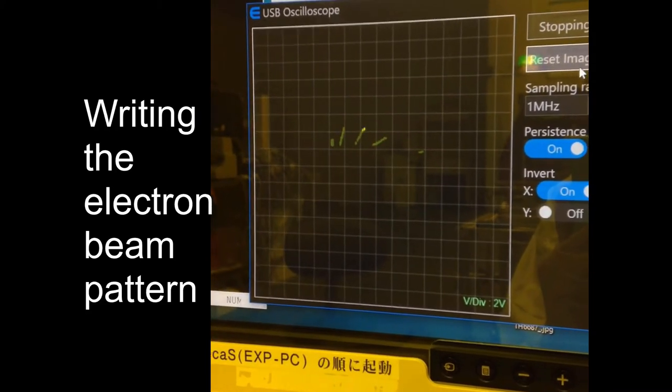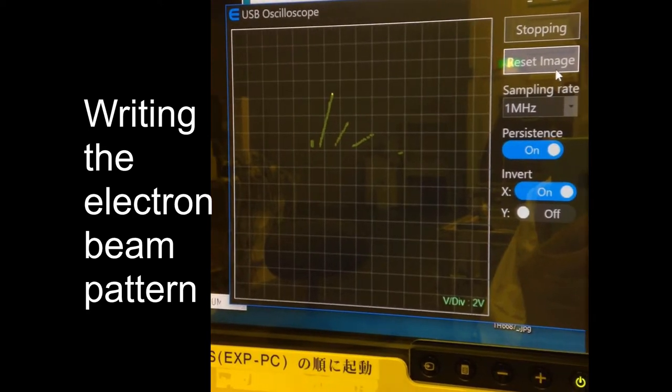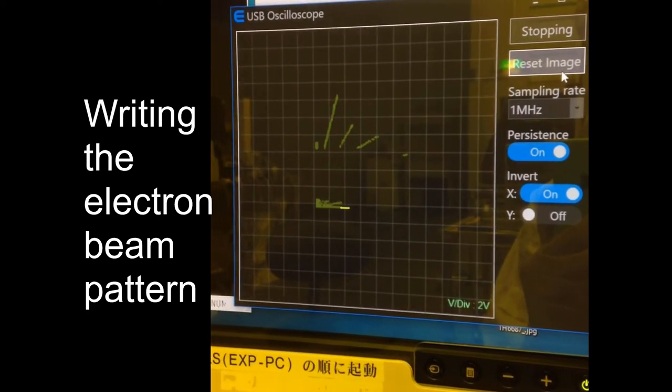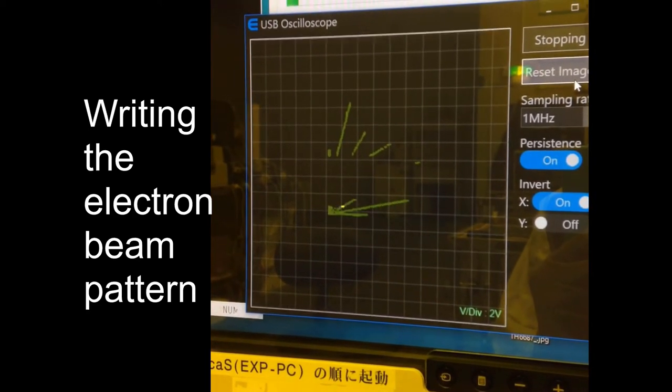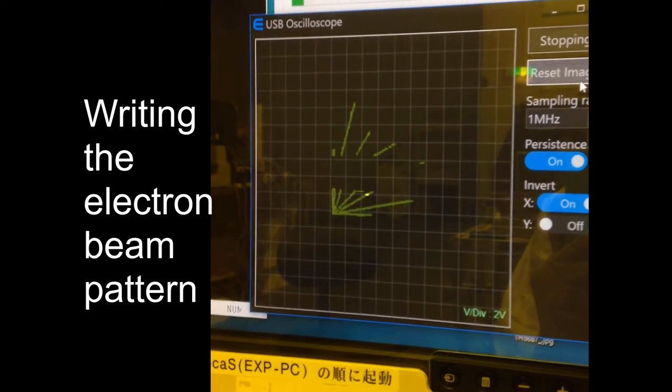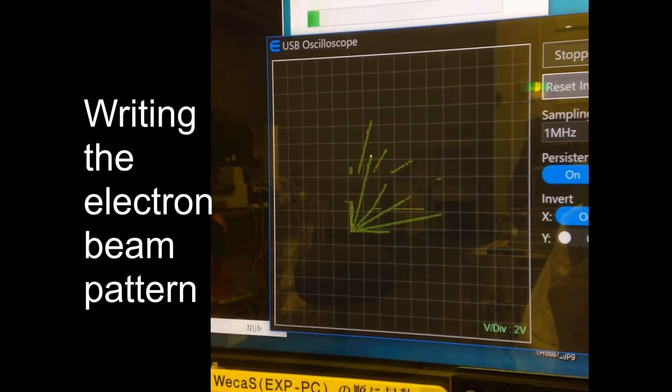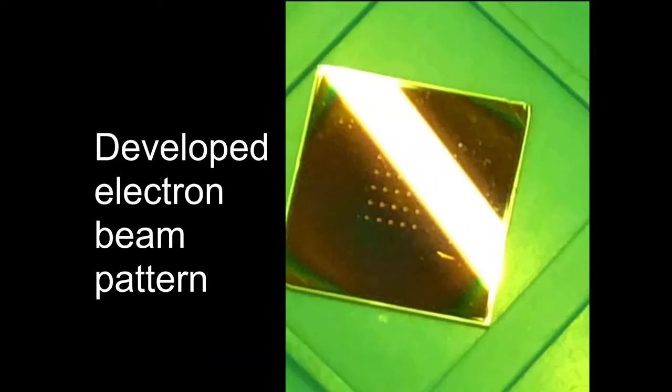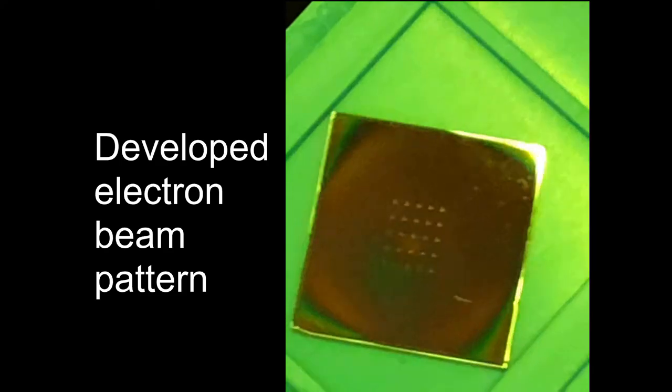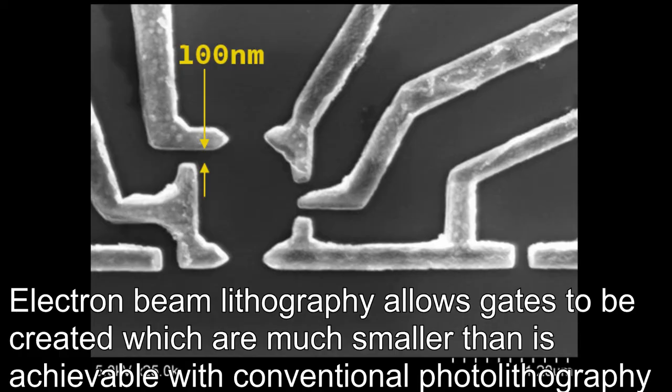Then, the beam is scanned across the chip to write each device pattern individually. We use this technique to create metal gates with feature sizes smaller than 100 nm, which is much smaller than can be achieved with photolithography.